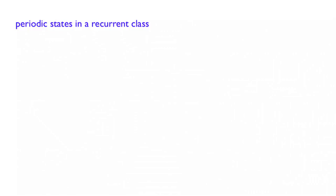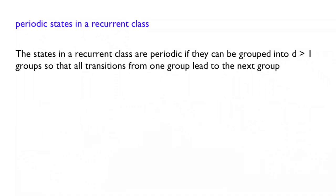As we have seen in the previous clip, another way that initial conditions may matter is if a chain has a periodic structure. There are many ways of defining periodicity, some more mathematical than others. Here is one of the most intuitive definitions: the states in a recurrent class are periodic if they can be grouped into several subgroups so that all transitions from one group lead to the next group.